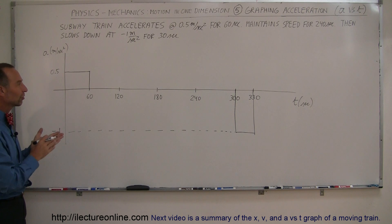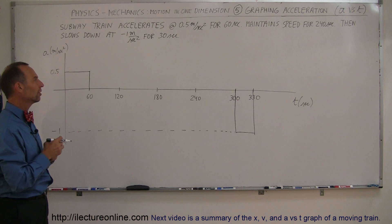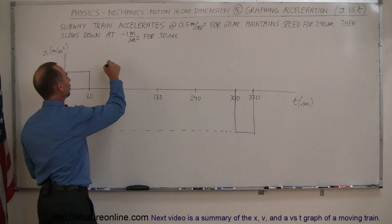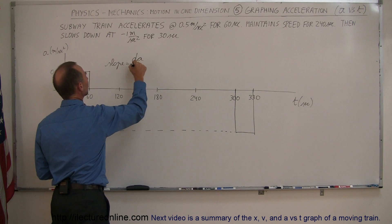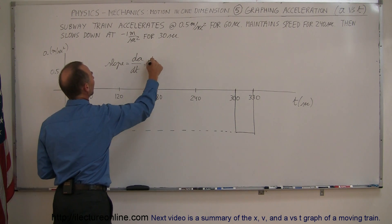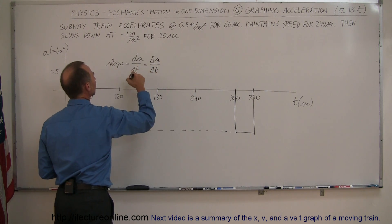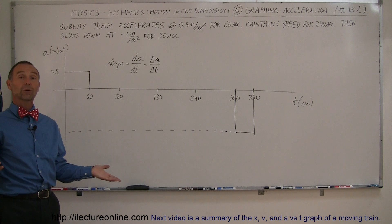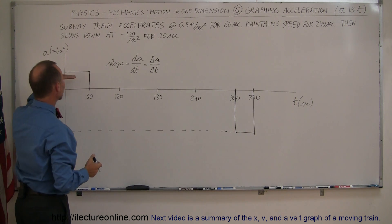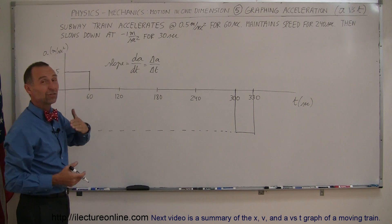When we come up here it's minus 1 meter per second squared for 30 seconds. So that's what an acceleration versus time graph looks like. Now, what does the slope represent on this graph? The slope would be defined as the change in acceleration over time, also written as delta A over delta time. Here you can see that the slope is zero, which means acceleration doesn't change — acceleration is constant.